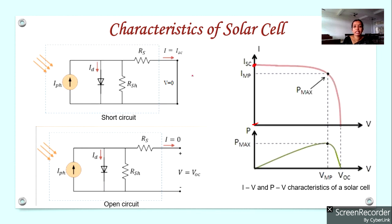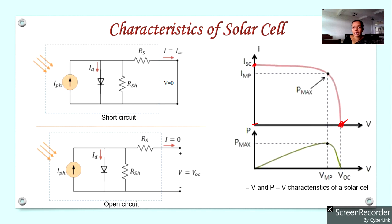The maximum voltage is obtained when the terminals are open circuited, giving the open circuit voltage VOC. Under open circuit conditions, no current flows, so current is 0. This gives the second extreme point on the IV characteristic: at voltage = VOC, current = 0.